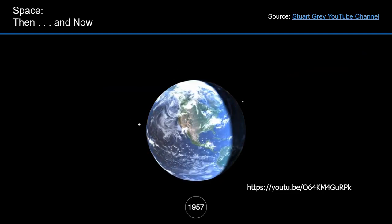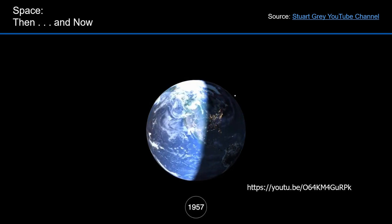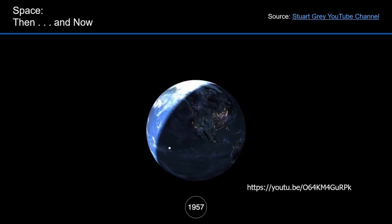Here's a movie by Stuart Gray that depicts the number of satellites orbiting the Earth from 1957, when the first satellite was launched, to 2015.